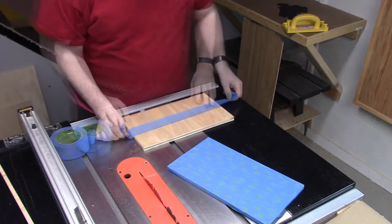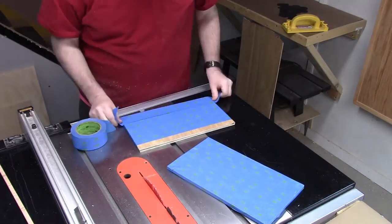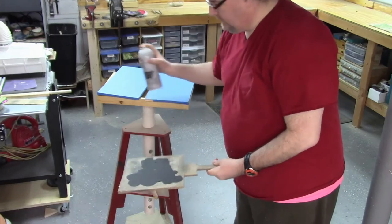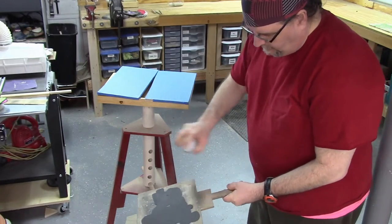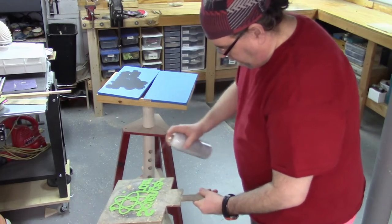But I figured I would give this blue painter's tape a try to see how well that would work. I'm just using some spray adhesive so I can attach it to the board and get it ready for the scroll saw.